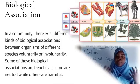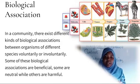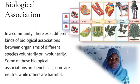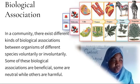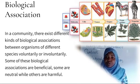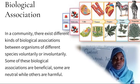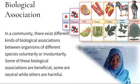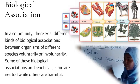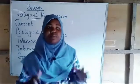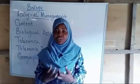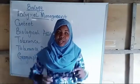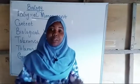When I say voluntary, that means they might be interacting with one another because they want to — because they are ready and willing to interact. It might be involuntary because it's just happening out of nature; they didn't plan to interact. So biological association is the interaction and relationship between organisms of different or same species in a particular habitat, which might be voluntary or involuntary.